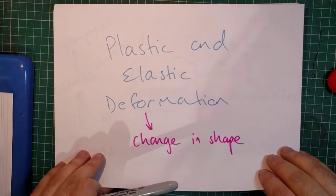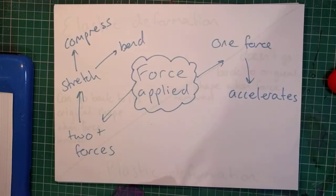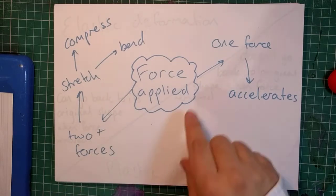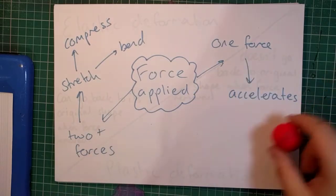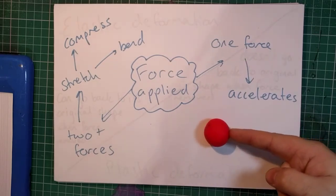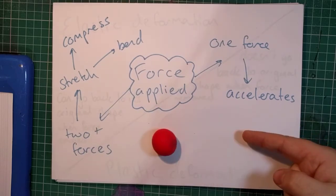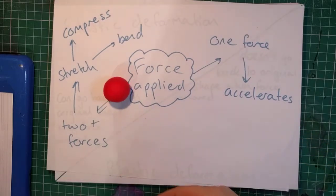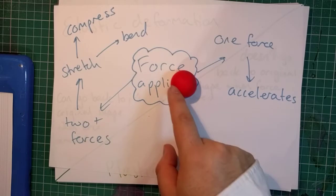So when a force applies to an object, you've got a couple of things that can happen. If you've only got one force acting on the object, so here's my helpful ball of Play-Doh, and if I only have one force applying to the object, then that object will accelerate. It will get faster in one direction or another.